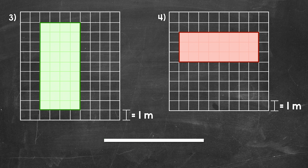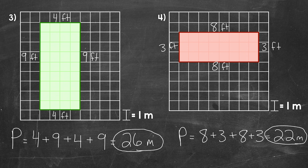Okay, so let's see what we have here for the perimeters. The perimeter for number three is 26 meters. Moving on to number four, the perimeter here is 22 meters. Now for both of these, like we talked about earlier, it doesn't matter what order we add the side lengths in. So if your work looks a little different than mine, that's okay — as long as all of the sides are included, we will get the correct perimeter.